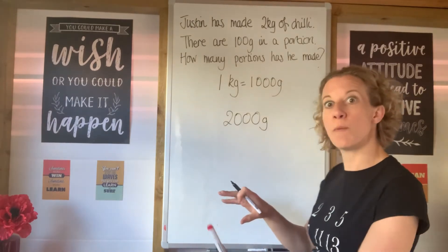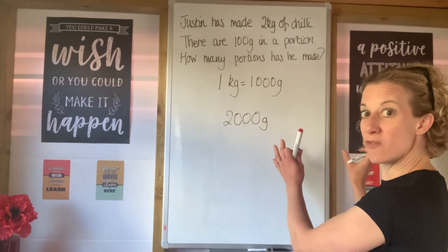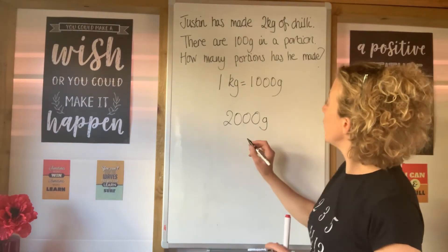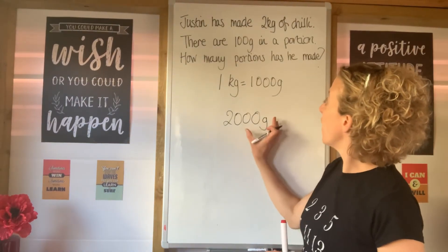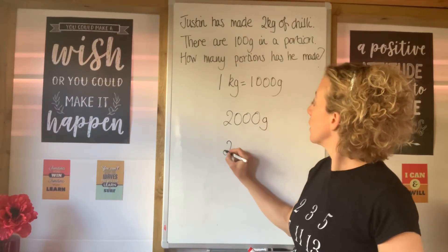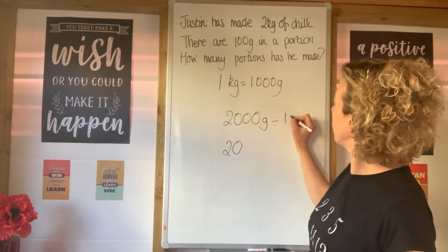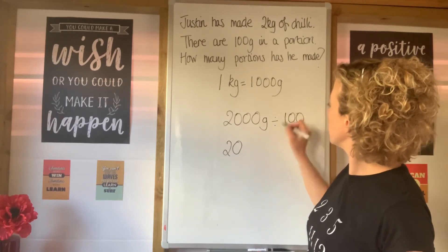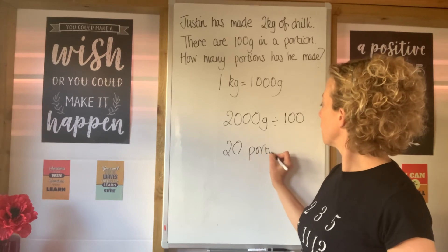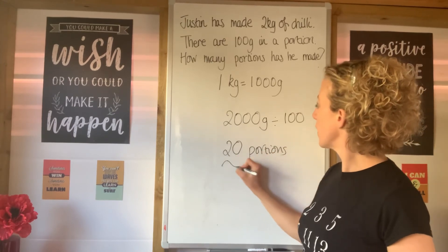Without a calculator, what we're doing is moving everything two spaces to the right on our place value. So if we divide 2000 by 100, it gives us 20. The answer is 20 portions.